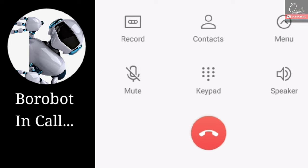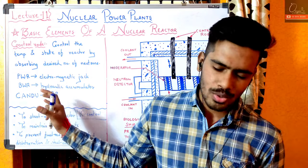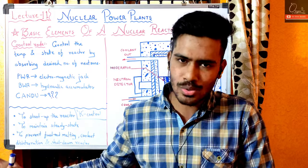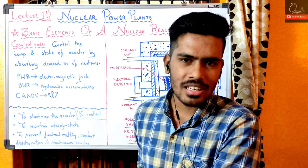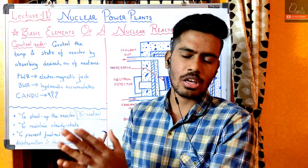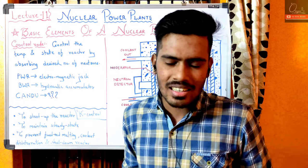Student question: जैसे आपने बताया कि control rods nuclear process को control करते हैं reactor के अंदर, but CANDU reactor में control rod है ही नहीं। तो क्या वहां पर उस process को control करने की ज़रूरत नहीं पड़ती? Teacher: CANDU reactor में कोई control rod नहीं होता, but इसका मतलब यह नहीं कि वहां पर process को control नहीं करते। किसी भी power plant में जो power producing process है उसको control करने का कुछ ना कुछ mechanism होता है जरूर।